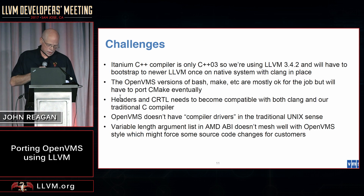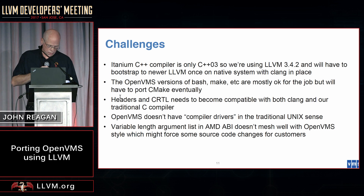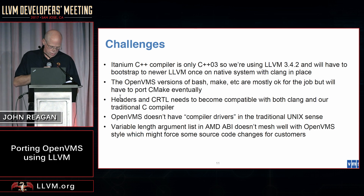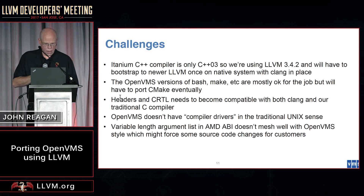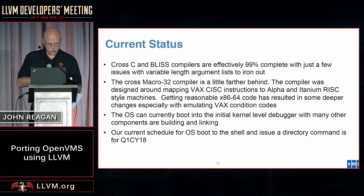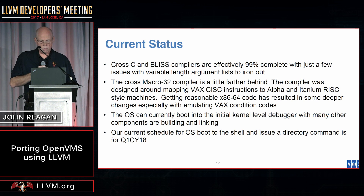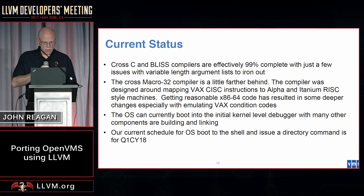For challenges, we've had to use an older LLVM and Clang since the C++ compiler we have is C++03 only. VMS hosting and new tools are only supported by a small group of people. We have headers and RTLs we have to merge together, and there's going to be a lot of work on the Clang driver to deal with the VMS file name syntax. On current status, the C and BLISS compilers are 99% complete, the macro compiler is a little farther behind. We can currently boot the operating system into a kernel debugger, with a full boot scheduled for the first half of 2018.